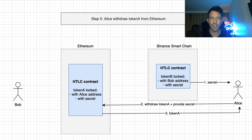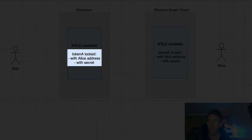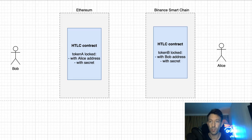So what about security risk? First, when the secret was revealed by Bob, token A on Ethereum was still secure because the smart contract will only release the token to the address of Alice. If anyone else tried to steal token A with the secret, it wouldn't work.